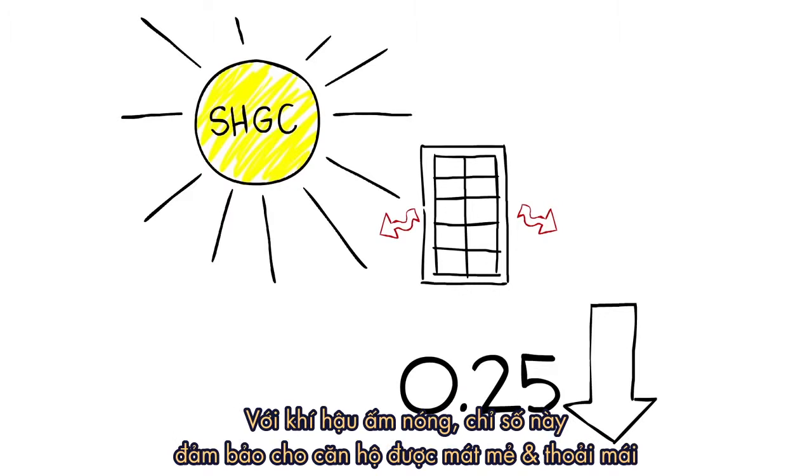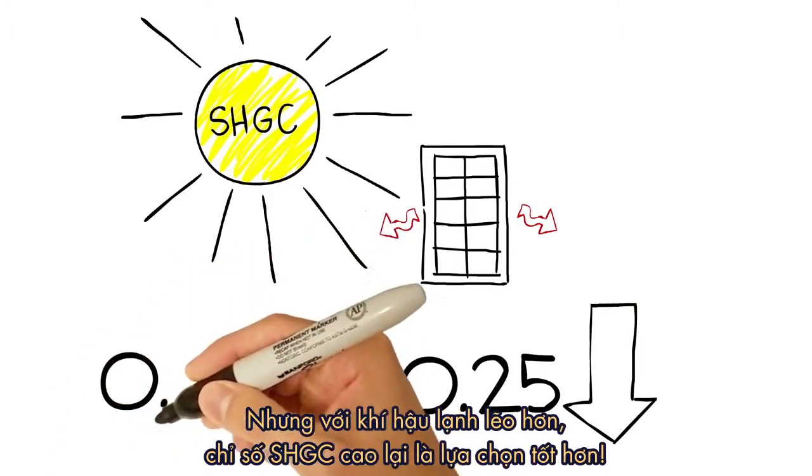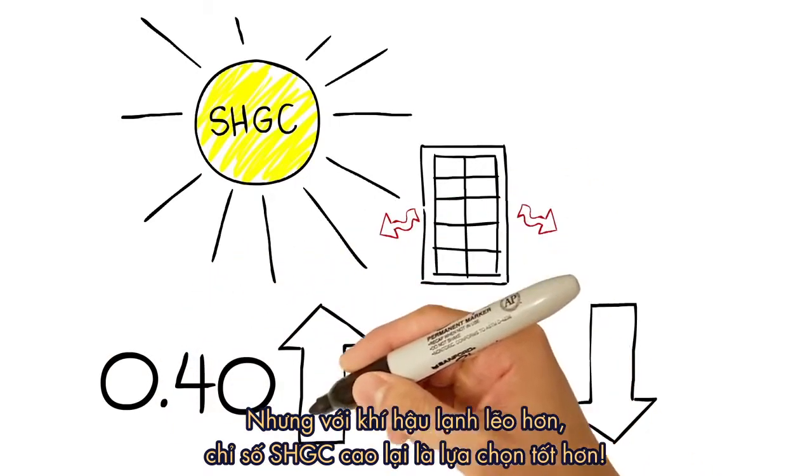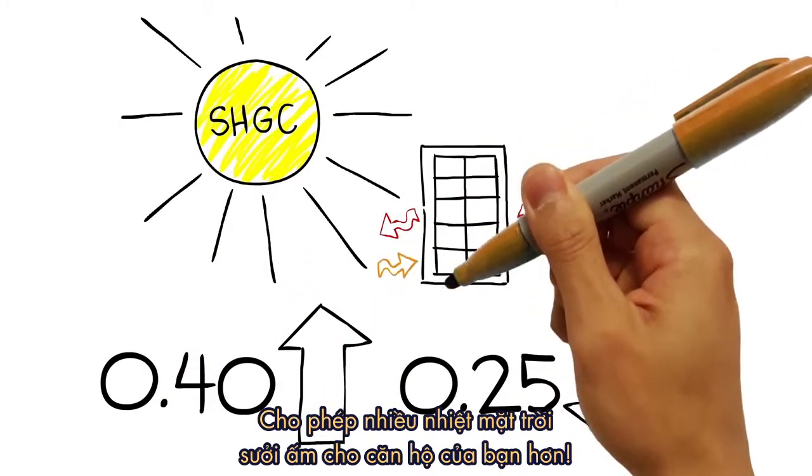In warm climates, lower ratings mean you'll be keeping your home cool and comfortable. But in colder climates, higher ratings might be a good thing, allowing more sun to warm your home.